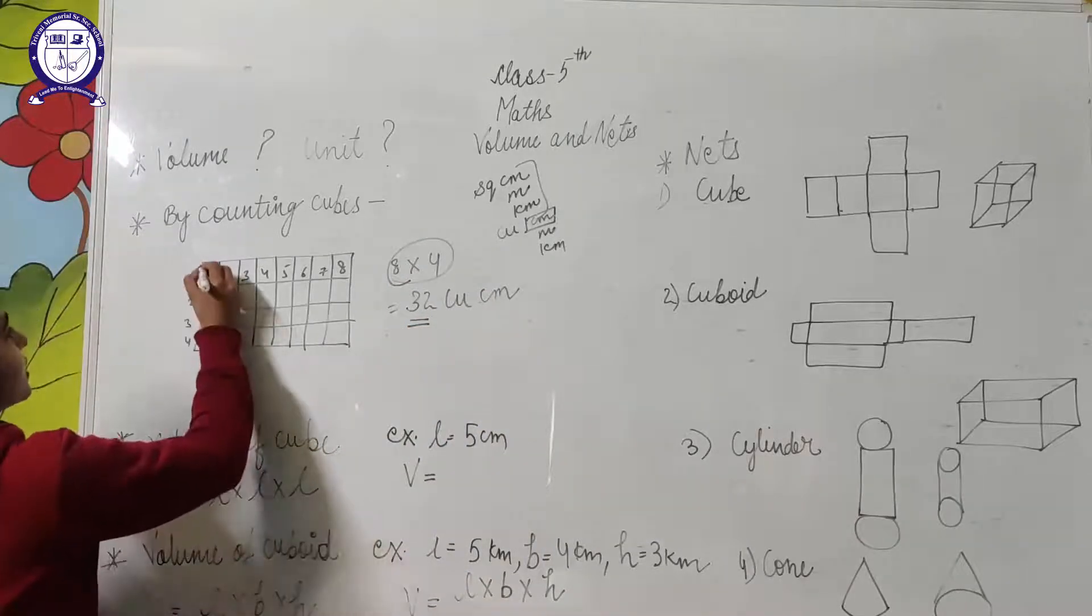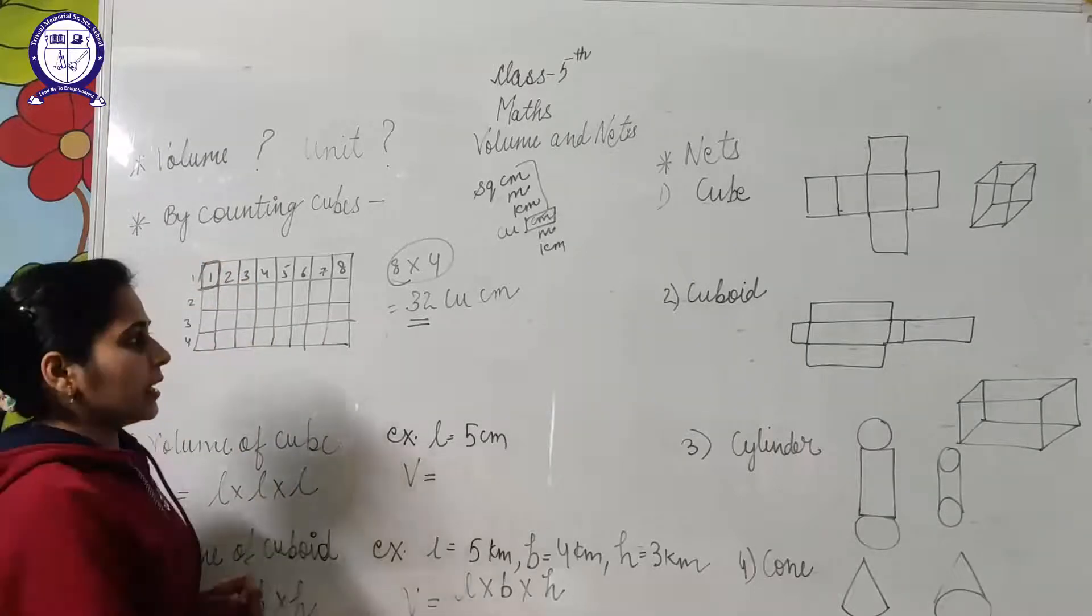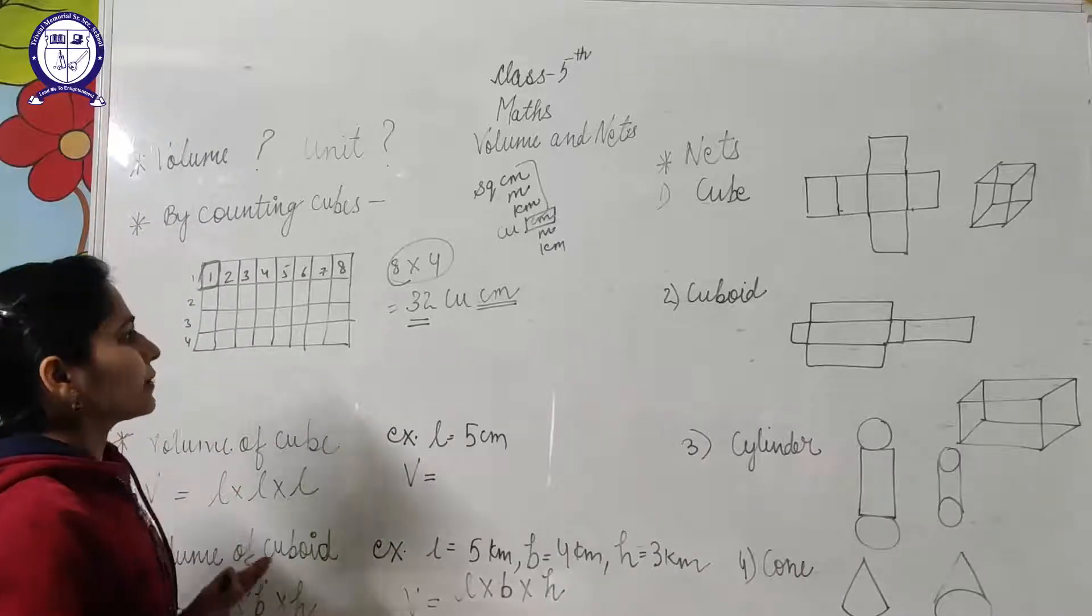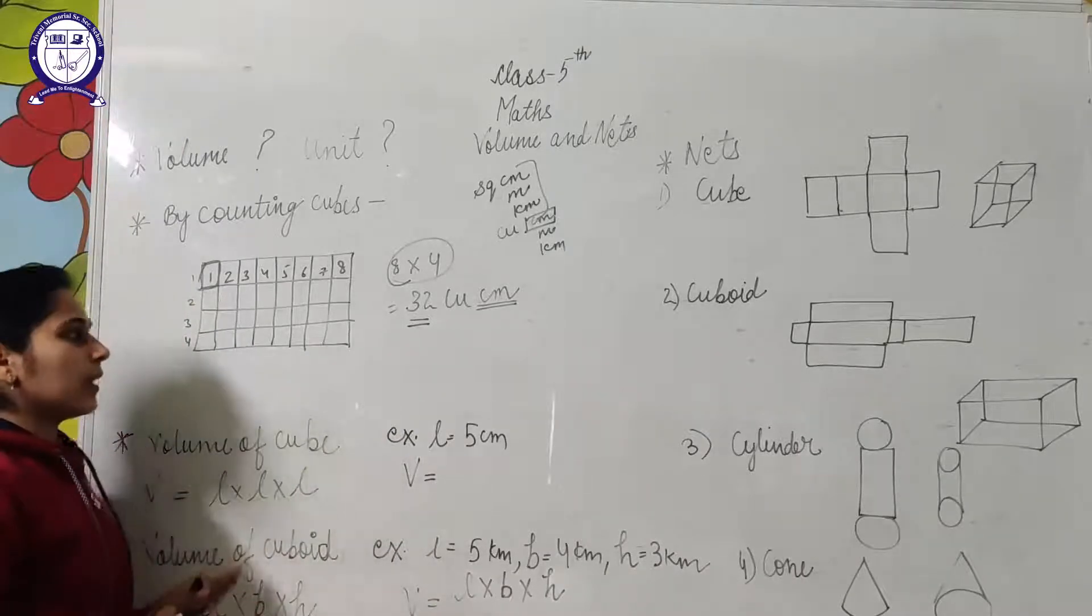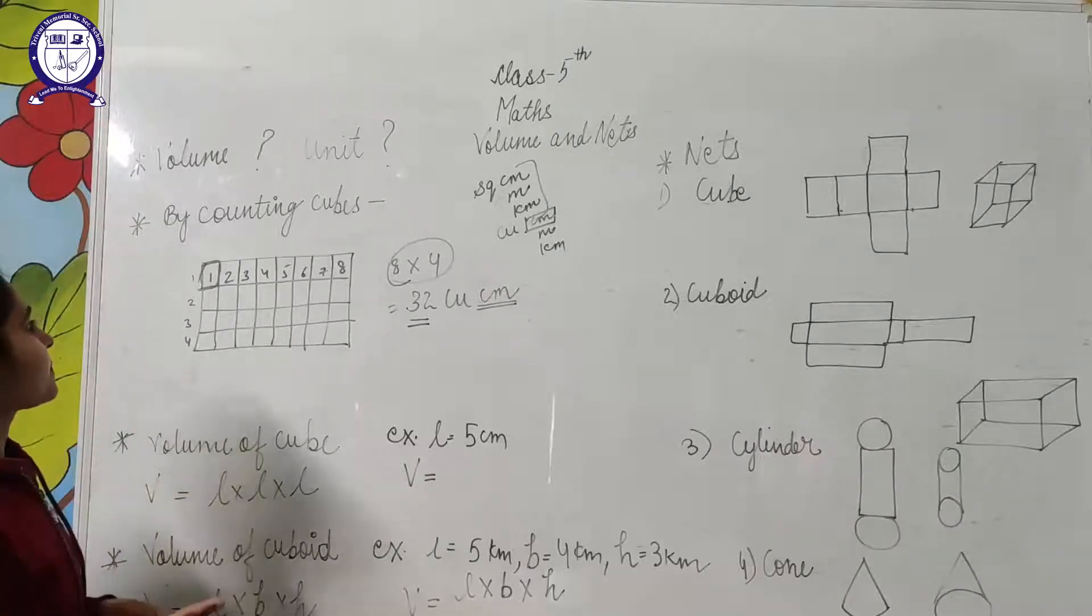When one cube stands for one cubic centimeter, we use centimeter. If millimeter is given, we will use cubic millimeter. In case of kilometer, we will use cubic kilometer. Like this, by counting cubes, we can find out the volume of any given figure.